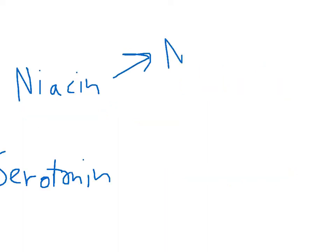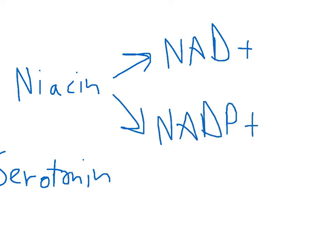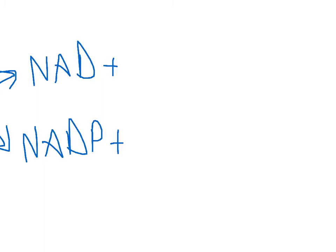Niacin is a precursor to two important molecules, NAD+ and NADP+. NAD+ is used in dehydrogenation reactions of carbohydrates, fats, and amino acids, and when it's used in that fashion, it creates NADH.